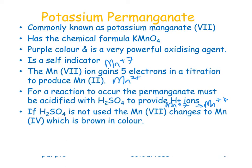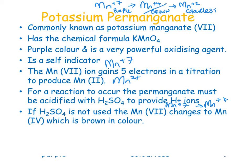The oxidation states progress as follows: Mn⁺⁷ to Mn⁺⁴ to Mn⁺². Mn⁺⁷ is purple, Mn⁺⁴ is brown, and Mn⁺² is colorless. You want to avoid the Mn⁺⁴ intermediate — that is, you want to avoid the formation of a brown precipitate.